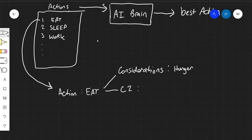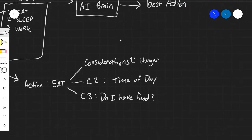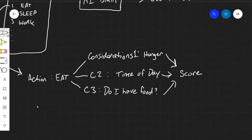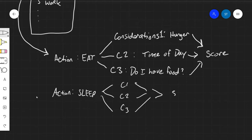Another consideration might be the time of day. Another consideration that goes into deciding if the NPC should or can eat is does he have food in his inventory? These would be the considerations that go into deciding how important this action is. And to quantify how important it is, we're going to have to somehow combine these considerations to give us a numerical score. You can do this for all the other actions as well. For the action of sleep, it's also going to have its own set of considerations, C1, C2, C3, and you're going to somehow combine them to give the sleep action a score.